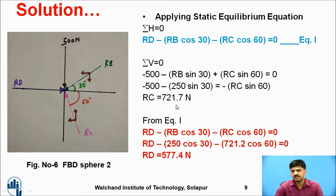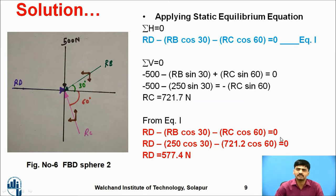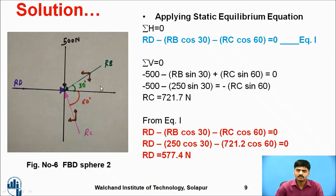R_C equals 721.7 newtons. Substituting R_C into equation 1: R_D minus 250 cos30 minus 721.7 cos60 = 0, giving R_D = 577.4 newtons. Likewise, you can easily calculate all unknown forces by applying the equilibrium equation or Lami's theorem.